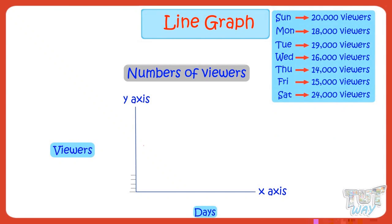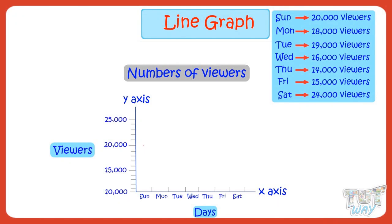As we make a scale along the y-axis to show the numeric values, first see the range of values to show on the scale. The quantitative or numeric data we have is in the range of 14,000 to 24,000 viewers. So we have to make a scale that accommodates values from 14,000 to 24,000. Let's make a scale showing 10,000 to 25,000 so that it accommodates all values. On x-axis, write the names of the days. Number of viewers on Sunday are 20,000, so we will make a dot along the day of Sunday and 20,000 viewers.